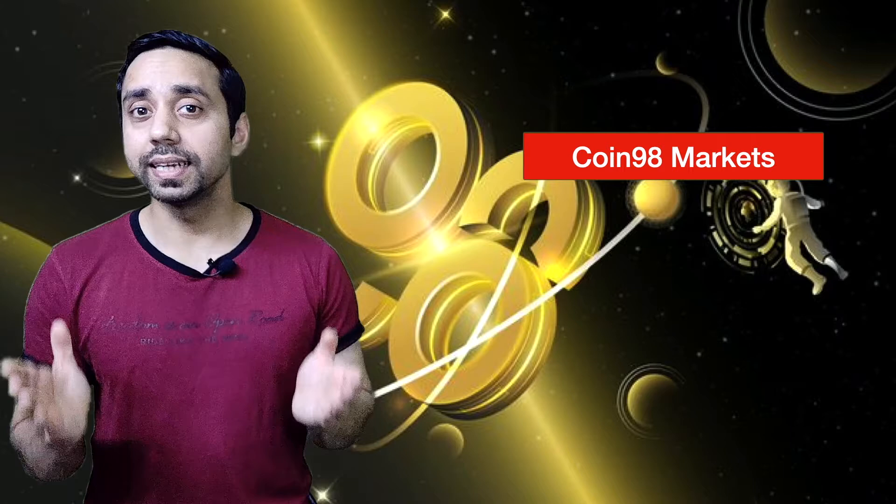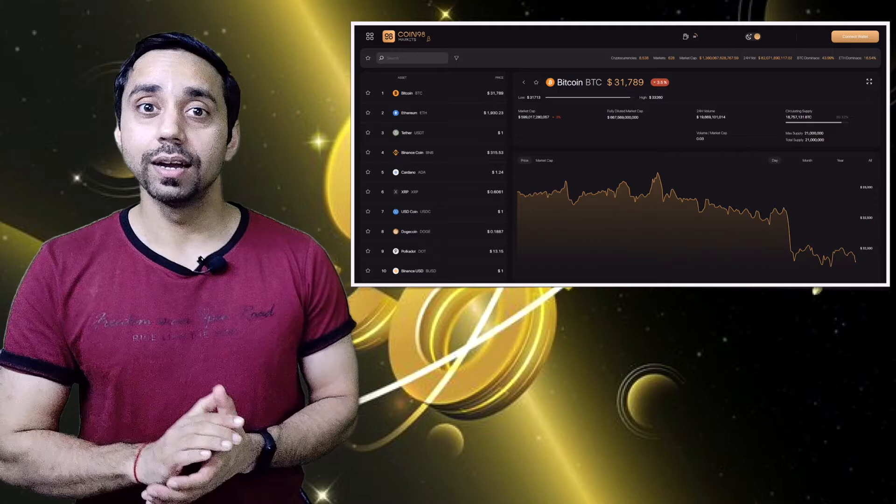After the portfolio comes Coin98 markets. So market is quite simple. It shows the real time data of all the crypto coins that are there on an exchange. Now with that, it also takes you through the home pages of each and every project just by clicking there within the Coin98 tab. And this is how the markets look like inside the Coin98 ecosystem.